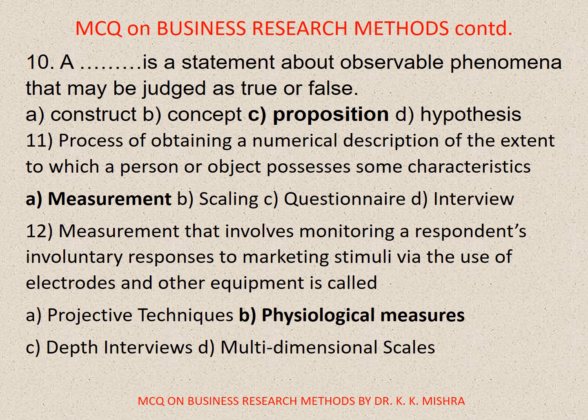Question number eleven. Process of obtaining a numerical description of the extent to which a person or object possesses some characteristics. Options are: A. Measurement, B. Scaling, C. Questionnaire, D. Interview. Correct option is A. Measurement.